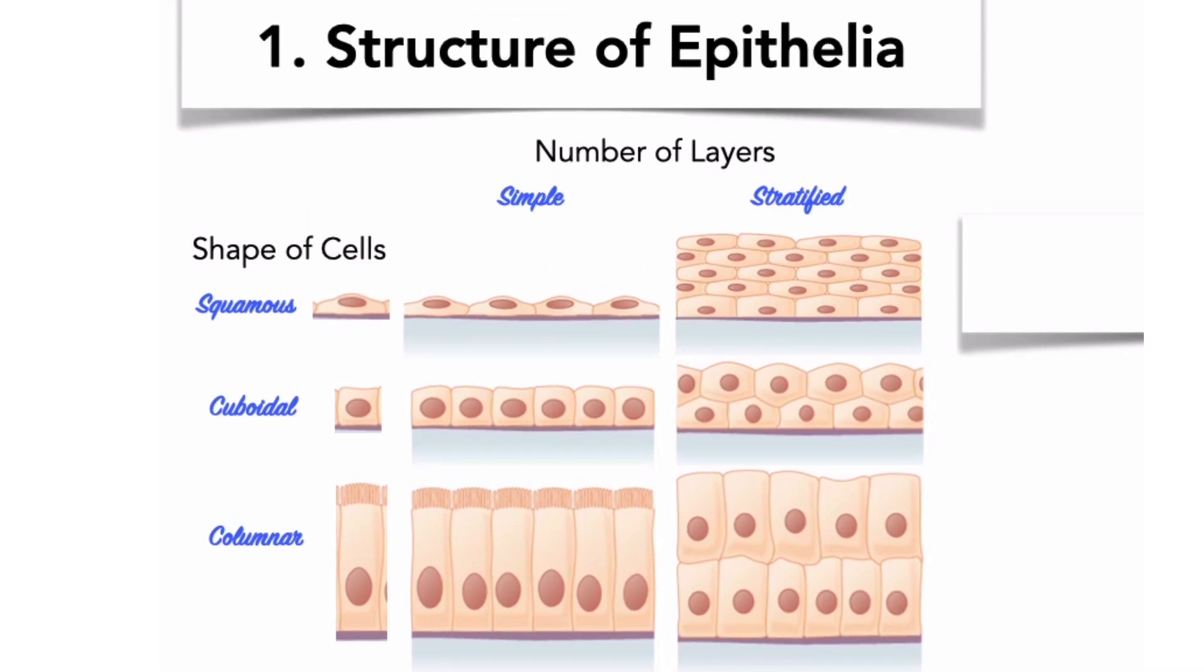All epithelial tissues sit on a basement membrane. They are connected to it by the cells of their deepest layer. Thus, in simple epithelia, all of the epithelial cells are in direct contact with the basement membrane. Simple epithelia are thin. We will discuss their distinct functions shortly, but it should be clear that they are fairly fragile and cannot provide much in terms of mechanical or physical protection.